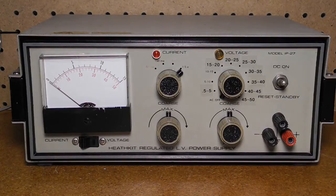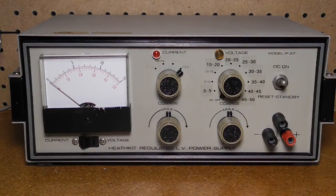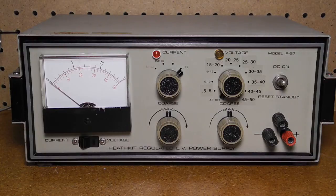Similarly, output current limiting can be set in one of four ranges using the coarse current switch, 50 milliamps, 150 milliamps, 500 milliamps, and 1.5 amps. The fine current control adjusts the output current continuously over the range.